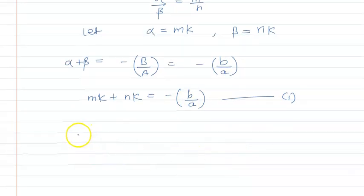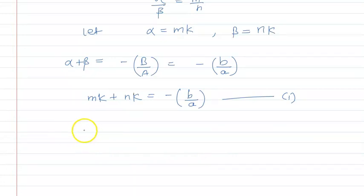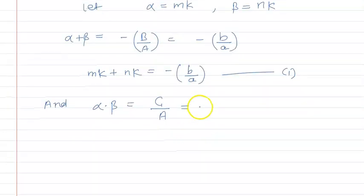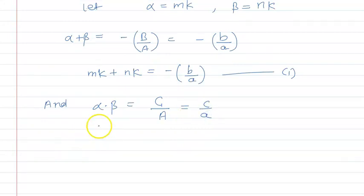And we know that product of roots for quadratic equation is alpha into beta equal to capital C upon capital A, where capital C is the constant term and capital A is the coefficient of x square. So here small c upon small a. And alpha value is mk into beta which is n into k will be equal to c upon a. So from here, m, n and k square equal to c upon a.